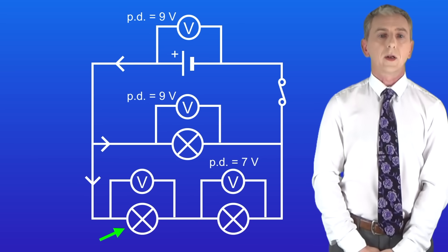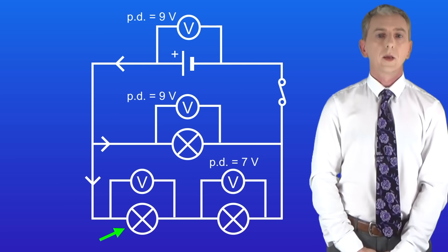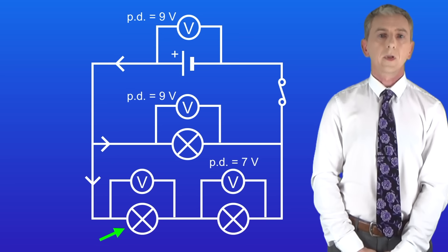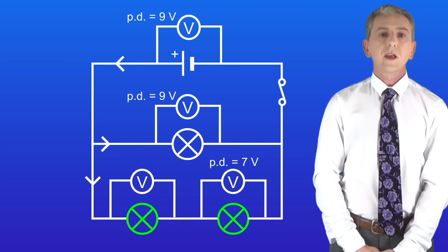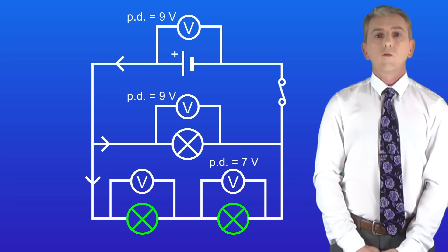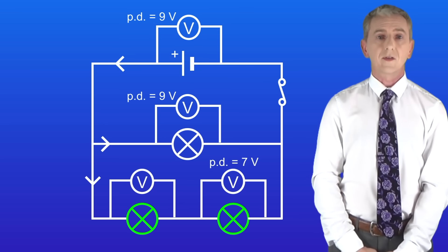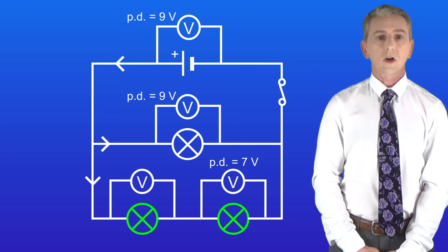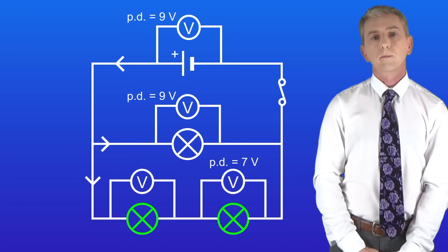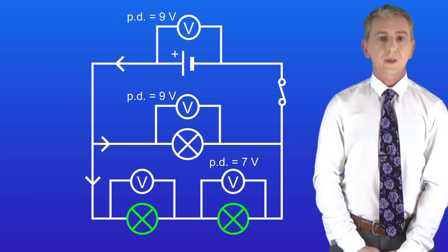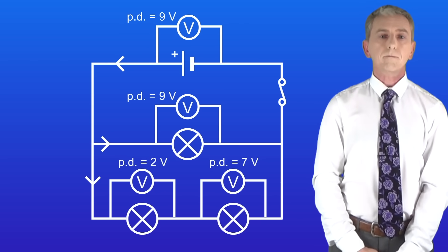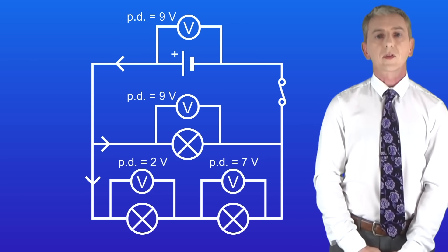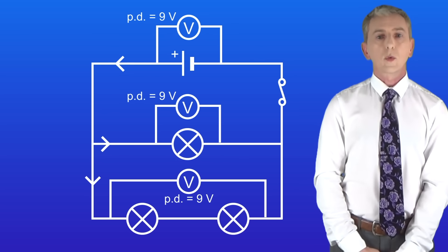Here's a slightly more complicated example — calculate the potential difference across the bottom lamp. Pause the video and try this yourself. In this example we've got two lamps in series, and these two lamps are in parallel with one other lamp. For components in parallel the potential difference across each component is the same, so the total potential difference across the bottom branch must equal the branch above. Looking at the two voltmeters, the right-hand lamp has a potential difference of seven volts, which means the left-hand lamp must have a potential difference of two volts. So if we put a voltmeter across both bottom lamps the total potential difference would read nine volts — the same as the branch above and the same as the cell.